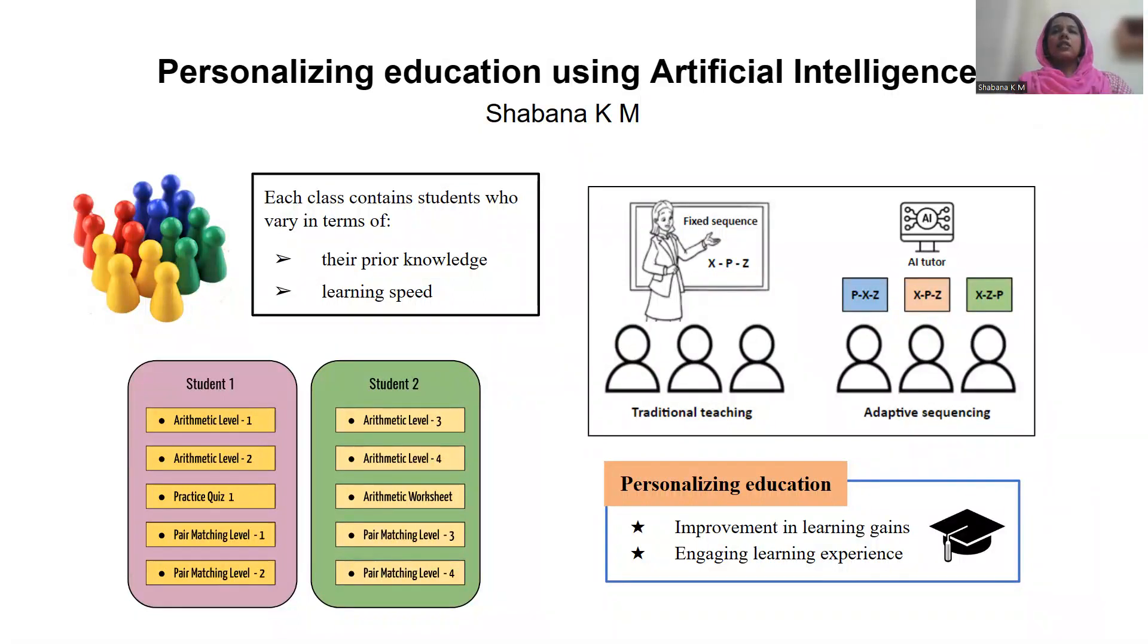We live in an era of personalization where artificial intelligence can recommend to us the next best movie to watch or the next best product to buy. Then why not have AI recommend to a student the next best question to solve or the next best lecture to watch? This is the problem that I have studied as part of my thesis work.